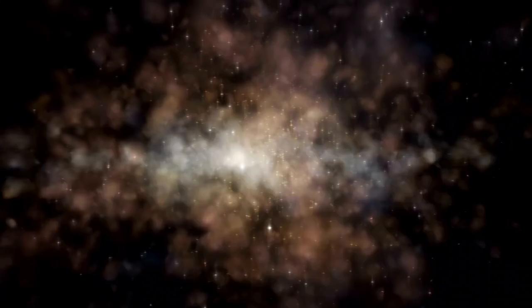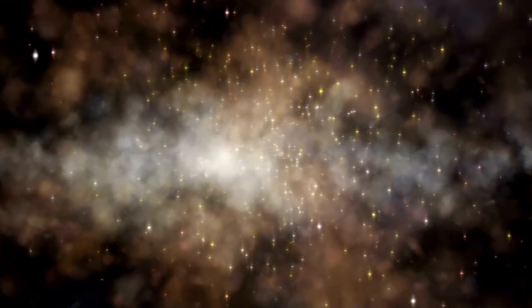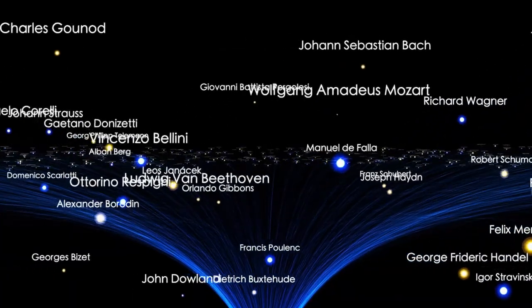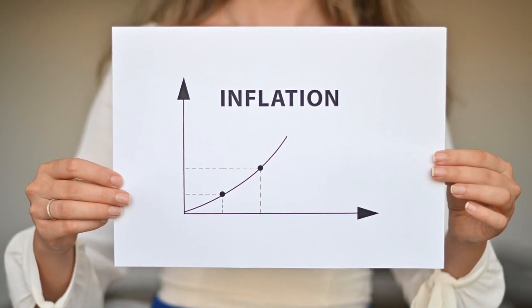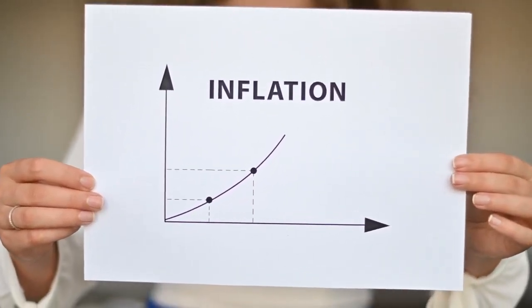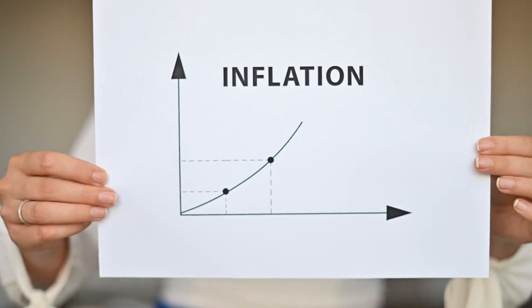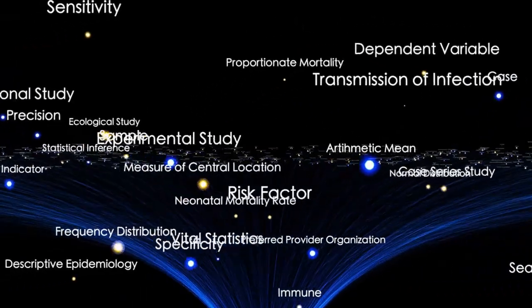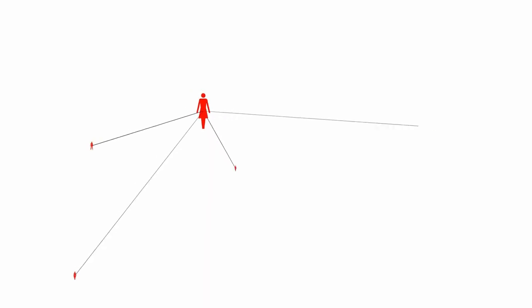One might wonder how the observable universe can be larger than the age of the universe in light years. The answer lies in the fact that the universe has been expanding ever since the Big Bang. Space itself is stretching, causing galaxies and other objects to move farther away from us over time. So the light we see today from very distant galaxies was actually emitted billions of years ago, and during that time, those objects have moved even farther away because of the ongoing expansion of the universe.